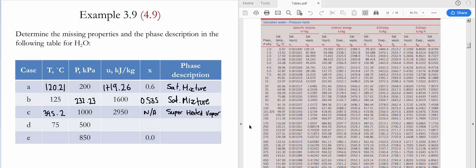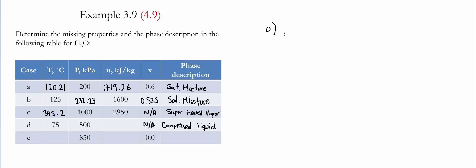Now let's do case D. In this case, temperature and pressure are provided. To determine the phase, we go to Table A5 and evaluate the saturated temperature at the given pressure of 500 kilopascals, which is 151.83°C. The provided temperature is 75°C, which is lower than the saturated temperature, indicating the phase is a compressed liquid. To find internal energy, we can use the compressed liquid table, but since the table starts at 5 megapascals, our pressure of 500 kilopascals is out of range.